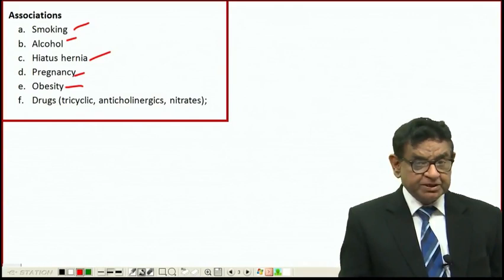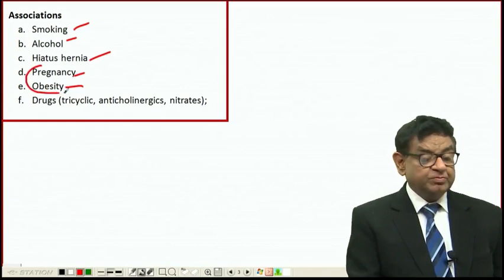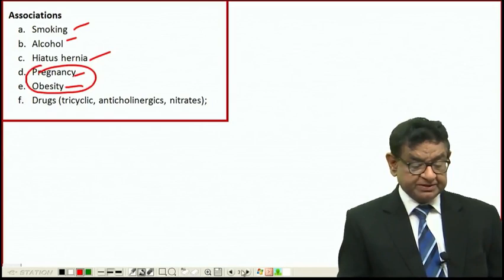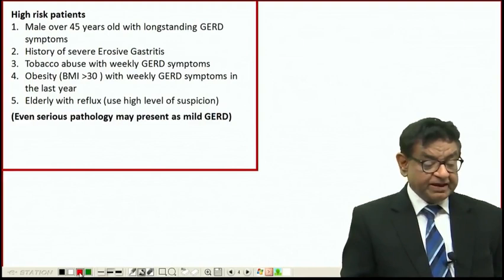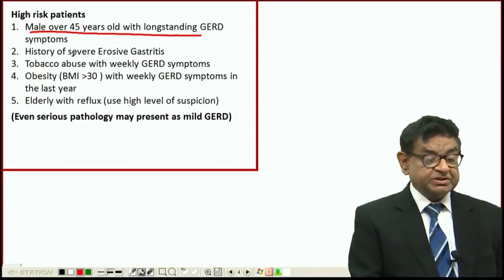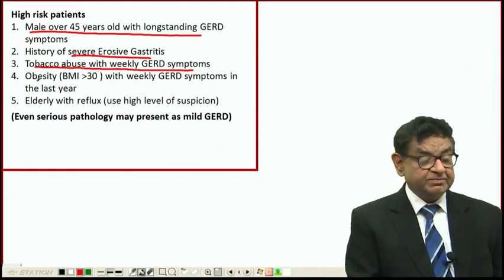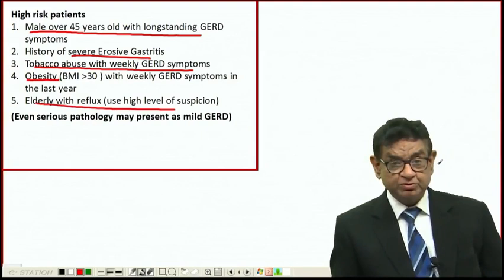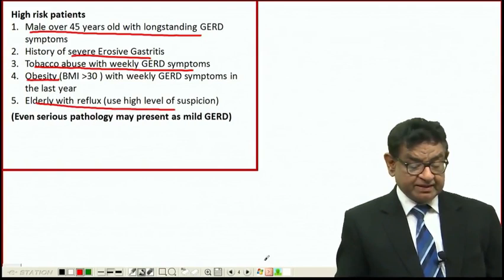Certain drugs like tricyclic antidepressants, anticholinergics, and nitrates can relax the lower esophageal sphincter and predispose to reflux disease. Obesity and pregnancy cause high abdominal pressure. Patients at high risk include males over 45 years with longstanding GERD symptoms, who are more prone to Barrett's esophagus, history of severe gastritis, tobacco abuse with weekly GERD symptoms, and obese and elderly patients with reflux.